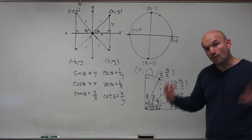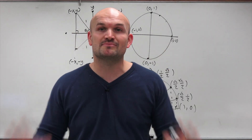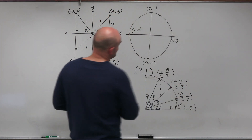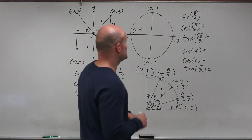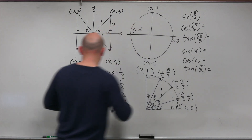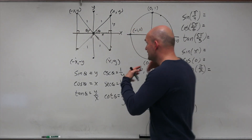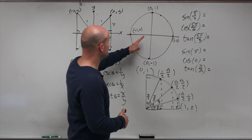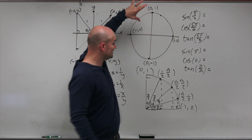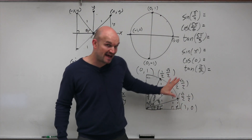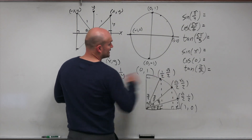Now I'm going to actually evaluate some trigonometric functions using these techniques. The first example: the sine of pi over 4. We know the sine of an angle equals y — the y-coordinate on the unit circle — which is true because the unit circle has a radius of 1. So all you do is look at the first quadrant at pi over 4, and you can see the y-coordinate is square root of 2 over 2.